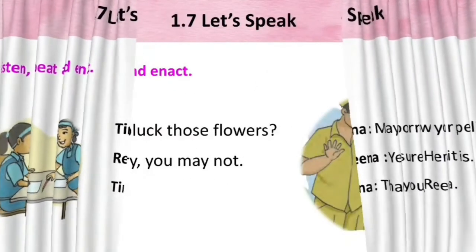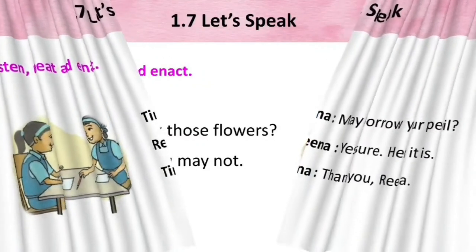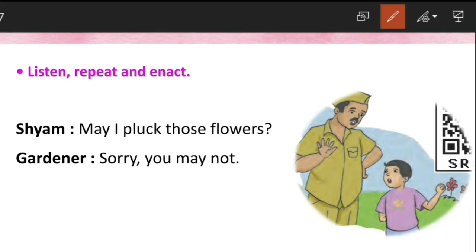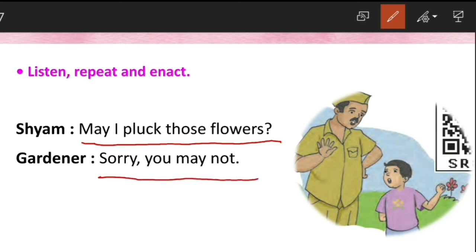Now this last conversation is between Shyam and the Gardener. Shyam asks the Gardener: 'May I pluck those flowers?' The Gardener says: 'Sorry, you may not.' Did you understand? These were all five conversations showing the use of 'May I'.